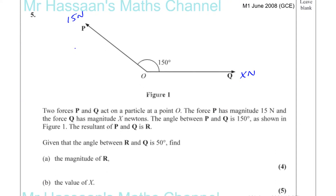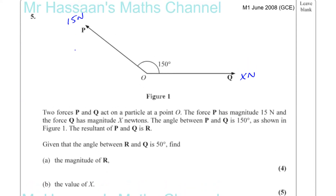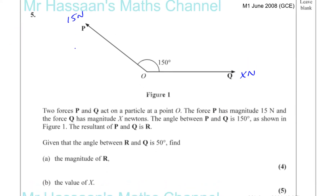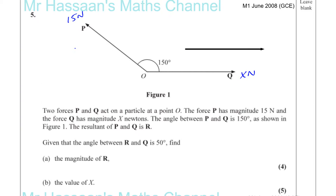What I'm going to do here is draw a vector diagram. There are two forces, so there are actually two different methods we could use. I'm going to use both methods. I'll show you first by drawing a vector diagram, with the force X Newtons going in this direction.